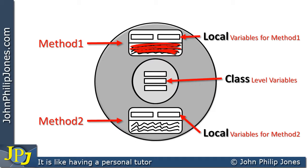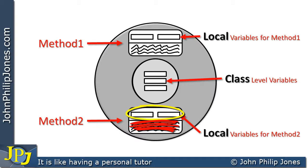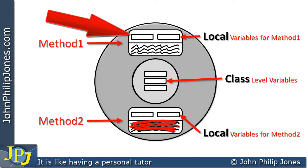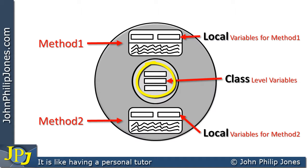The program code in method 1 has access to its own local variables, and also to the variables declared at the class level. It does not have access to the variables in method 2, because those are local to method 2. Similarly, method 2's code has access to its own two variables as well as the three class-level variables in the middle, but not to the local variables in method 1. We call the inner variables class-level variables because of where they are declared in the class, even though this is an object — the object is simply an instance of that class.